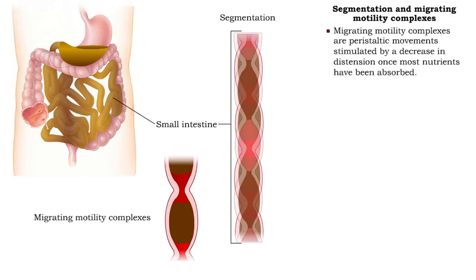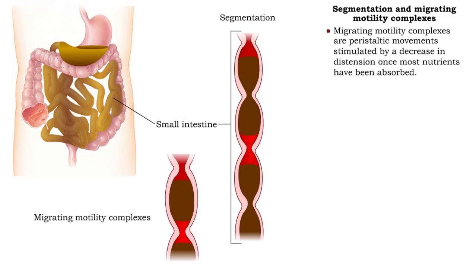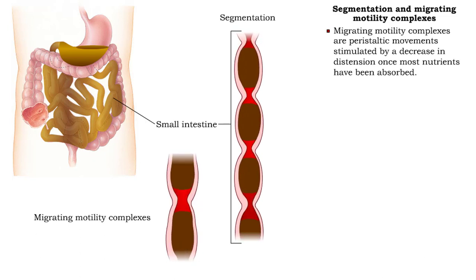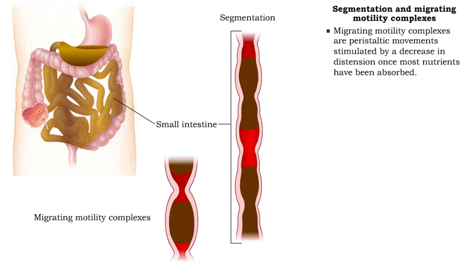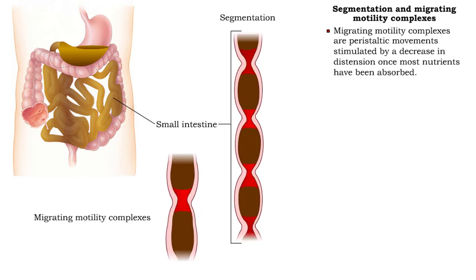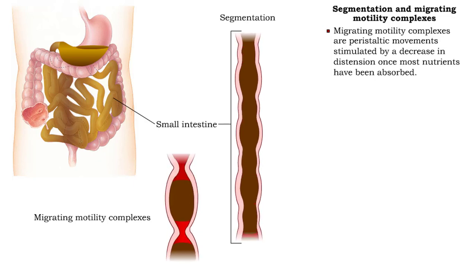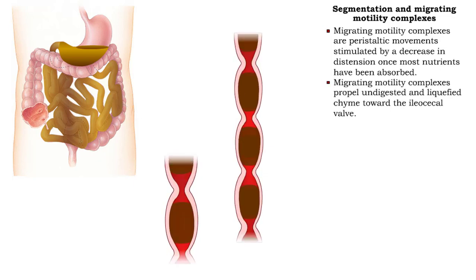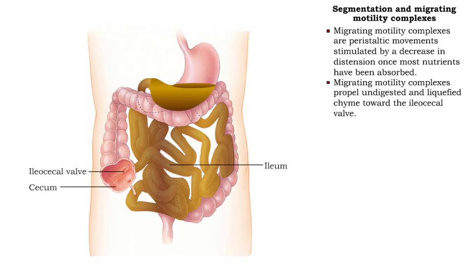Peristaltic movements, known as migrating motility complexes, are stimulated due to a decrease in distention when most of the nutrients have been absorbed in the small intestine. Migrating motility complexes are responsible for propelling the undigested and liquefied chyme toward the ileocecal valve.